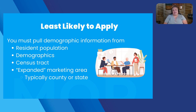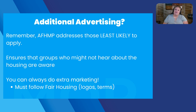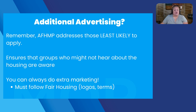One common question is: can I do advertising in addition to my marketing plan? You absolutely can do additional advertising. Your affirmative fair housing marketing plan is focused on those least likely to apply — people that may not hear about your property or are least likely for a number of reasons to apply. You can always do extra marketing as long as you meet your affirmative fair housing marketing goals. You can certainly do advertising beyond that to make sure you have enough applicants on your waitlist. The only caveat is you must follow fair housing rules, ensuring the terms, logos, and other things you're using meet fair housing requirements.